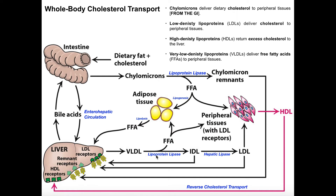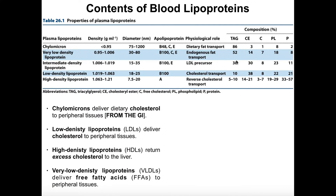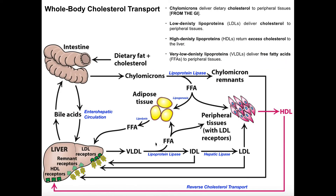When chylomicrons got rid of their triglycerides they became chylomicron remnants; when VLDLs get rid of their triglycerides they instead become something called IDL — intermediate density lipoprotein. IDL has a significantly lower percentage of triglycerides because the VLDL just got rid of those by splitting off free fatty acids. The cholesterol composition percentage increases not because it gained more cholesterol, but because the triglyceride percentage went down. VLDL gets rid of free fatty acids and becomes IDL.